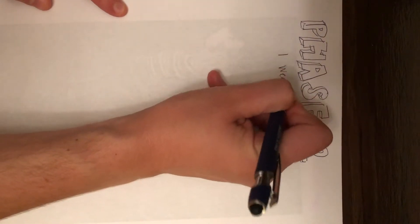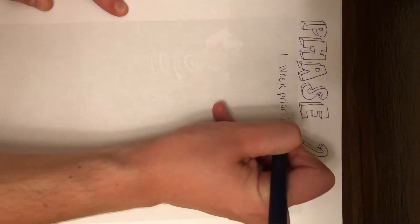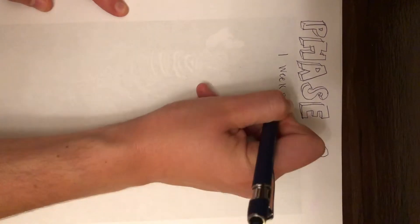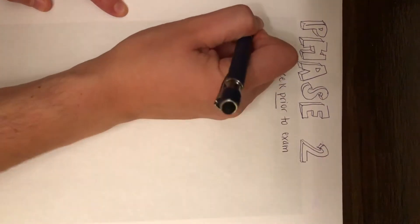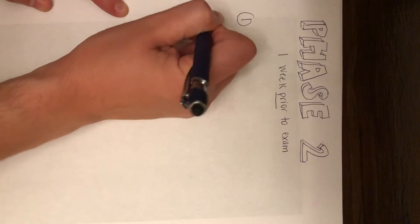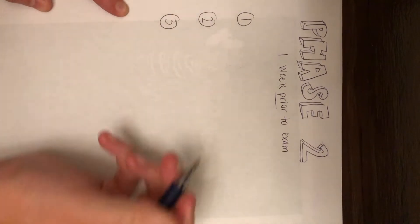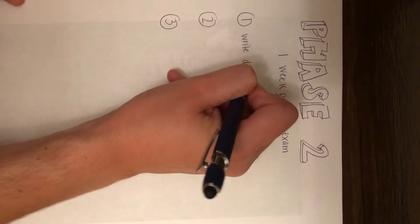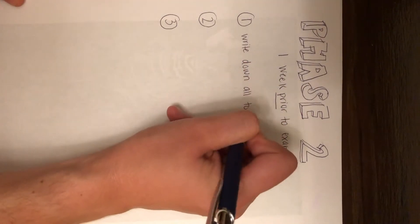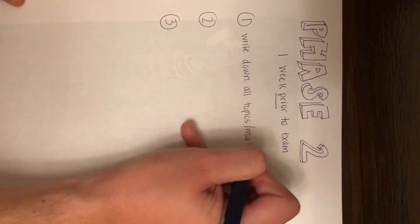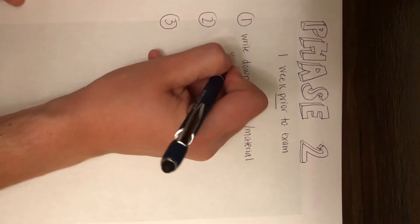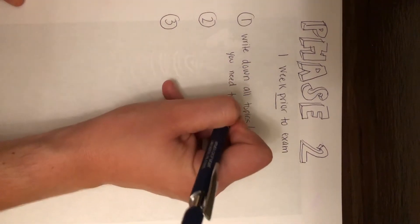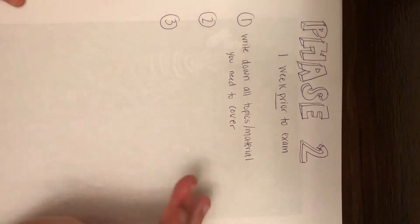So phase two begins one week before the exam day. The first step of phase two is to make a list of all the topics that you need to know for the exam. So sometimes teachers will give a blueprint or a topic list that'll help guide you when you're studying. Writing it all down in a list will help you to know if you've covered everything that you need to know and you can cross off the topics as you cover them.